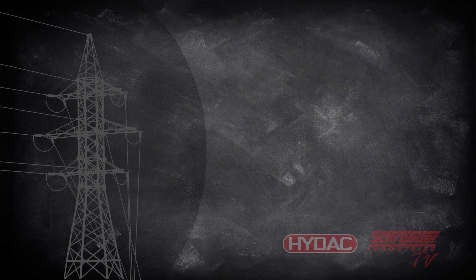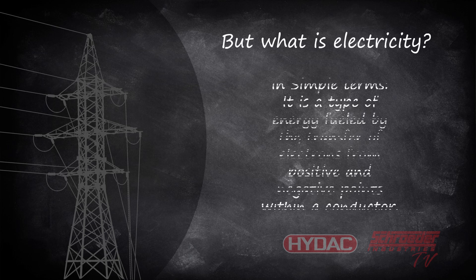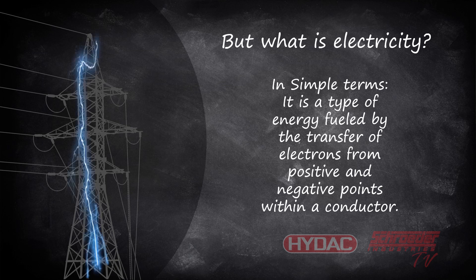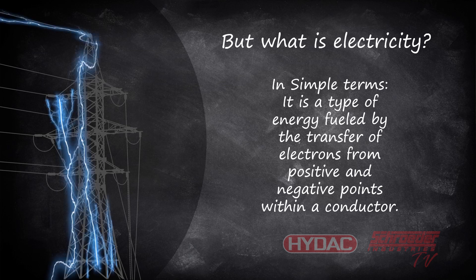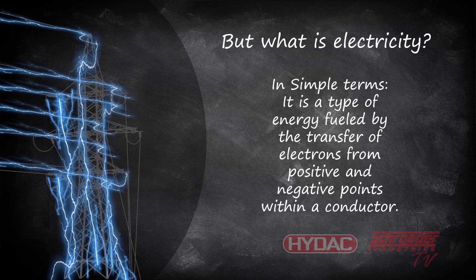So, what really is electricity? Simply put, it is a type of energy fueled by the transfer of electrons from positive and negative points within a conductor. Electricity can also mean the energy you get when electrons flow from one place to another. Remember, lightning is nothing but a large number of electrons flowing through air all at once, releasing a huge amount of energy.